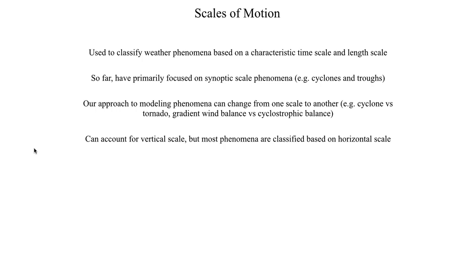With scales of motion, we can also account for the vertical direction, but usually when you look at scales of motion, you're mostly looking at what's happening in the horizontal direction and what's happening with time. The characteristic time for a cyclone is usually several days, sometimes even a week, whereas tornadoes under normal circumstances don't last longer than an hour, and most are down and up within a few minutes.